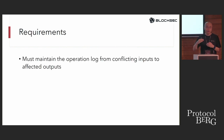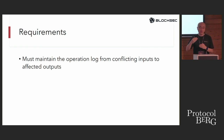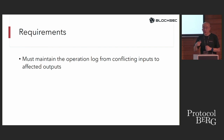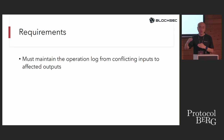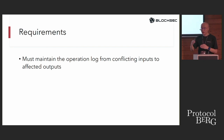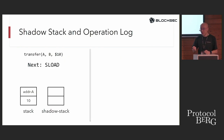In order to redo part of a transaction, we must maintain extra information during execution. Specifically, we maintain an operation log from conflicting inputs to the affected outputs.